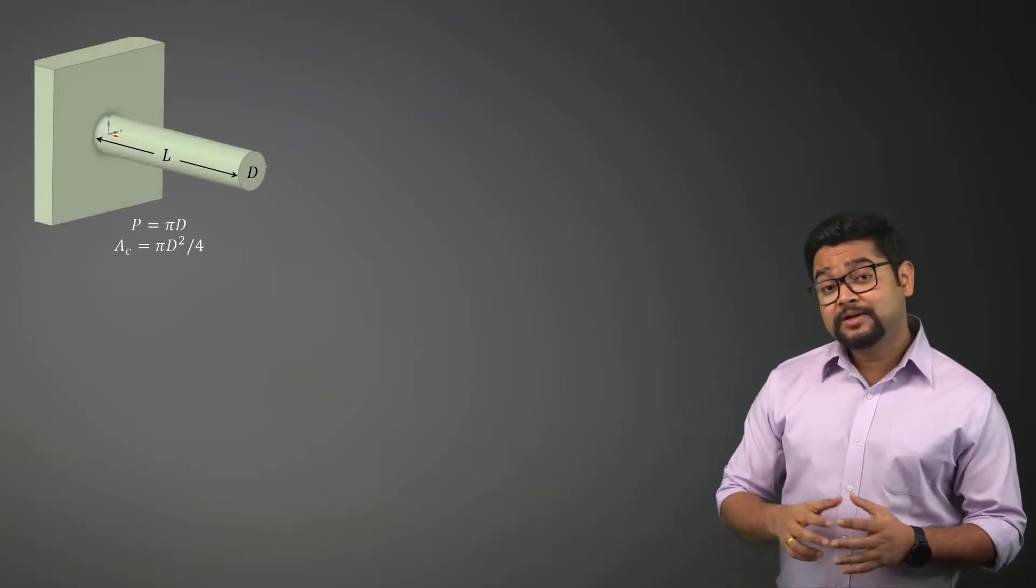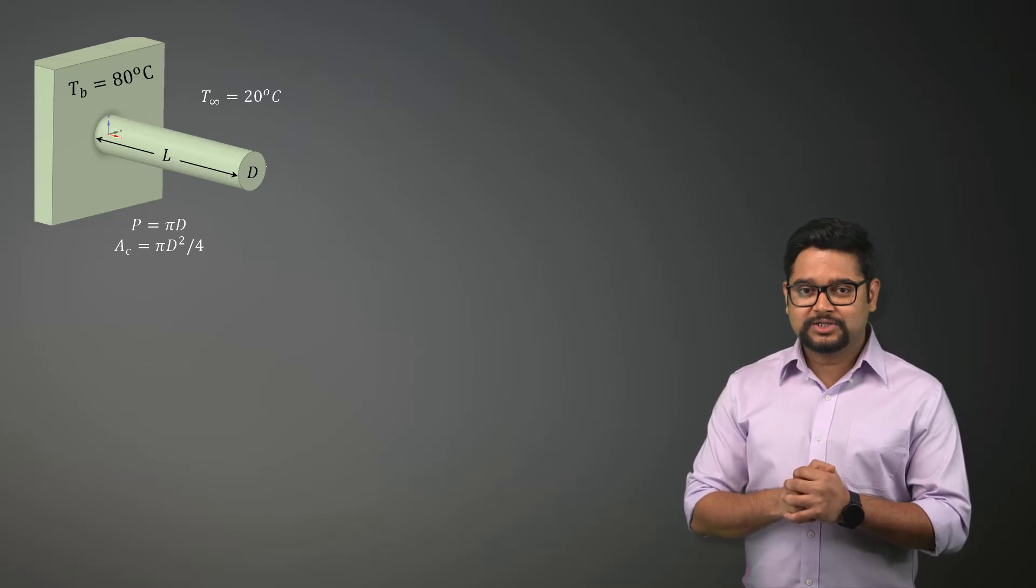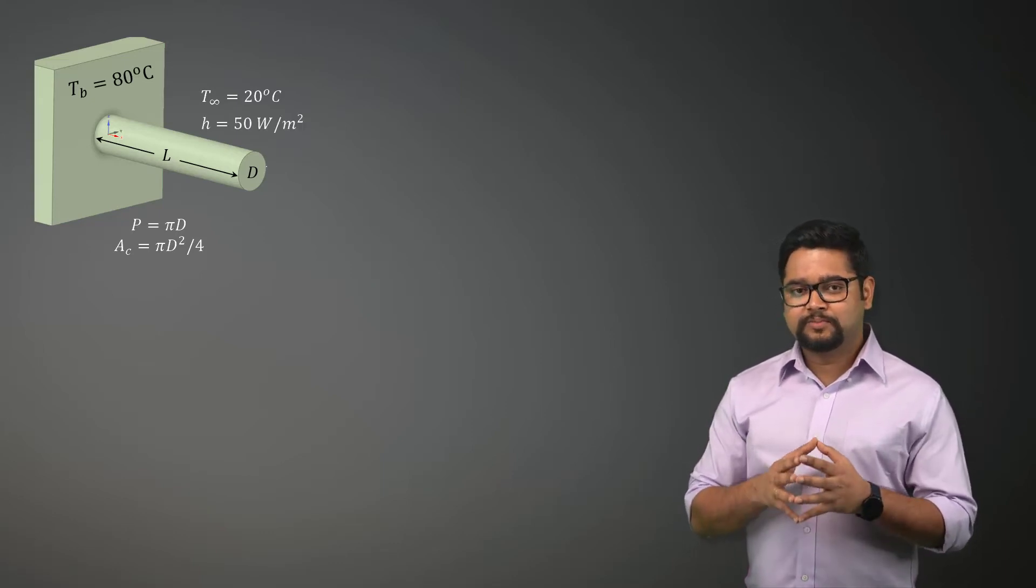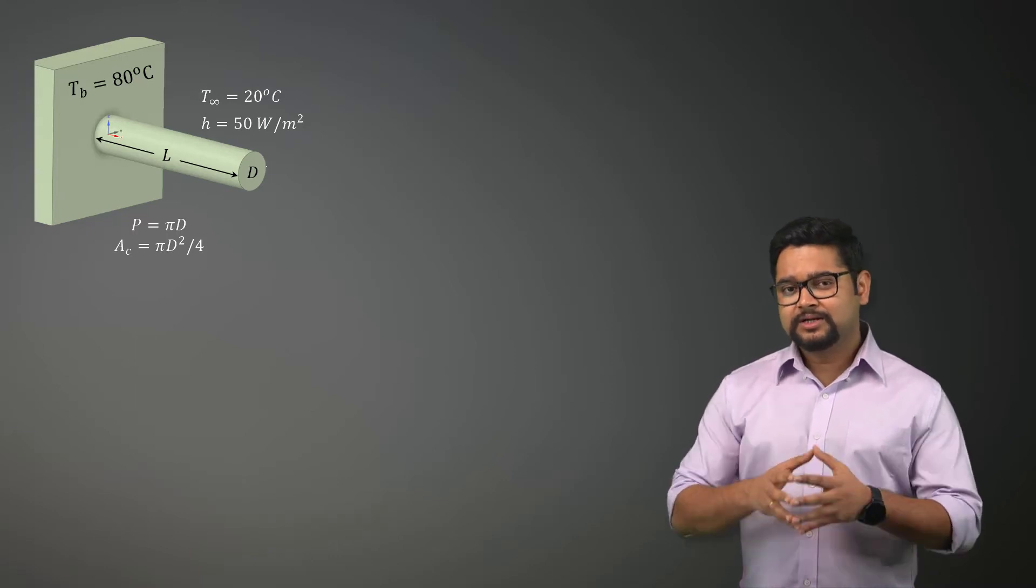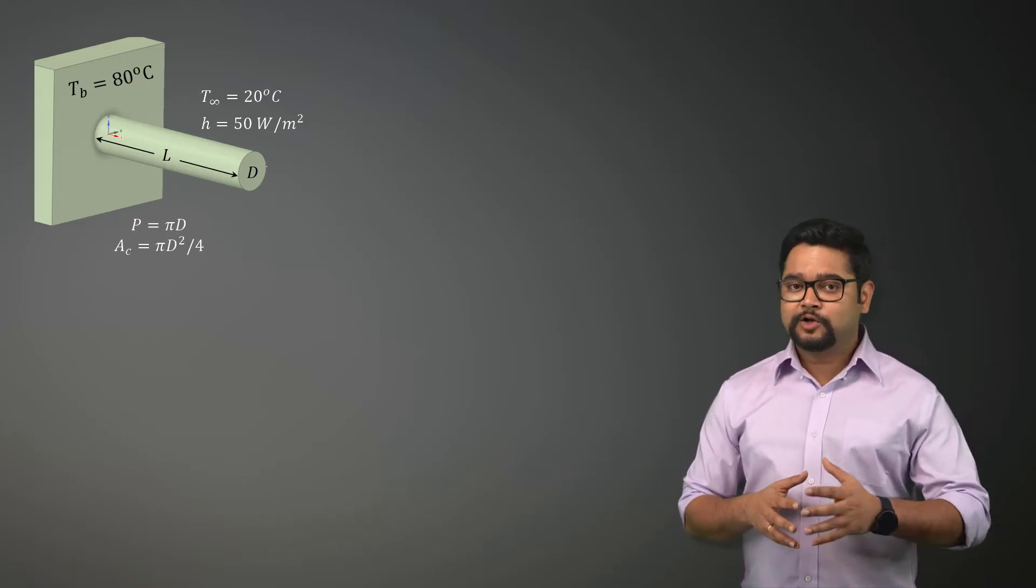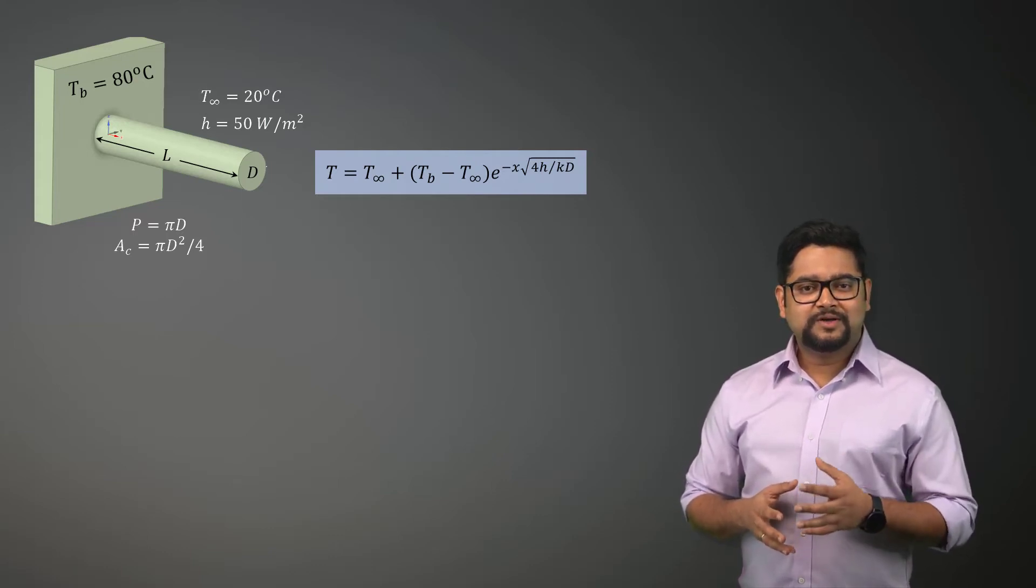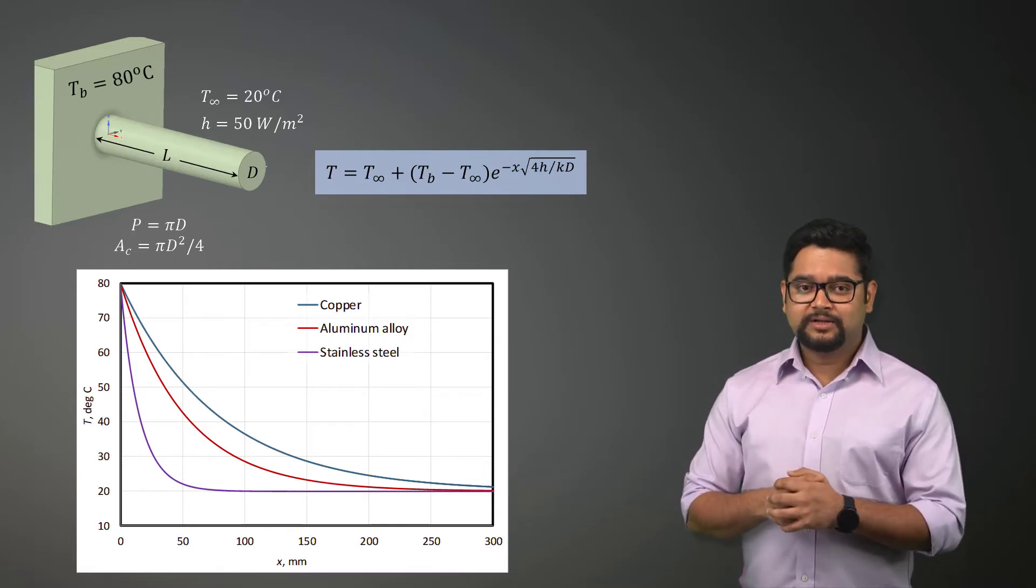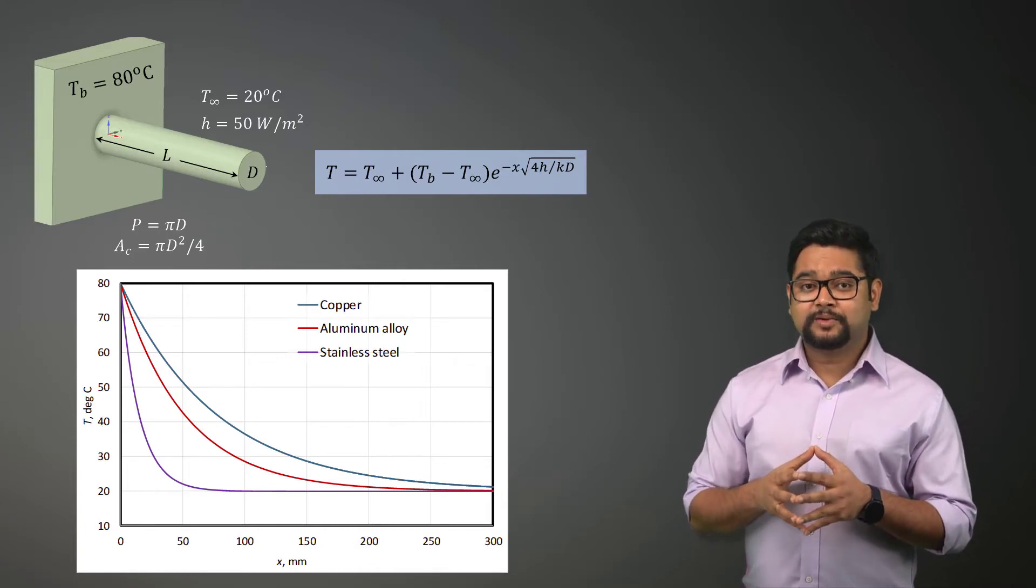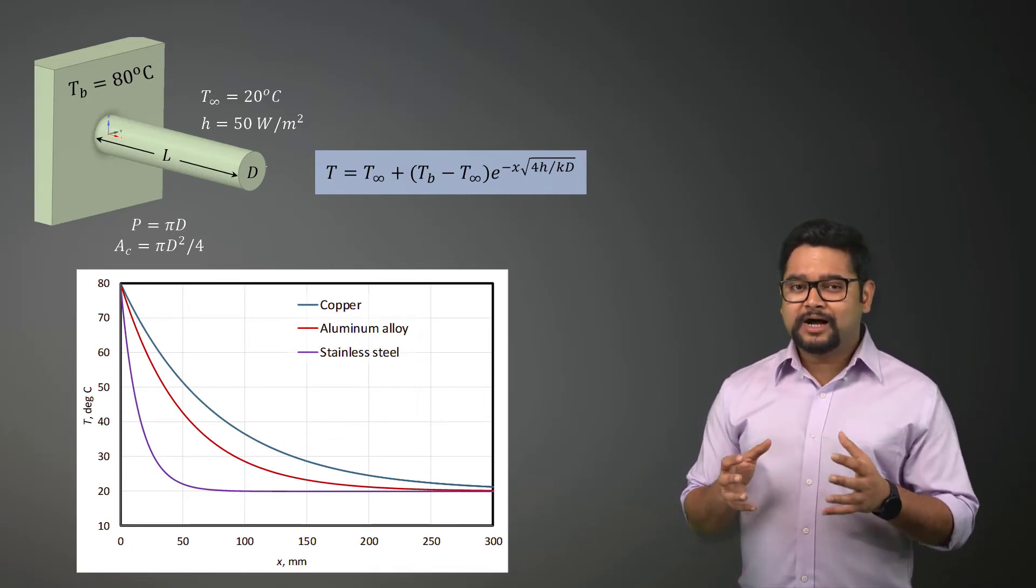Let's consider a long pin fin of a heat sink having a diameter of 3 mm. The fin base temperature is 80 degrees Celsius, whereas the ambient temperature is 20 degrees Celsius with a heat transfer coefficient of 50 watts per meter squared. Assuming the fin is long enough for its end to attain ambient temperature of 20 degrees Celsius, the temperature distribution is given by the following expression. Using this, we can plot the axial variation of temperature for fins made of different materials. As copper has the highest thermal conductivity among the three, we can see that the copper fin has the highest overall temperature compared to the other two. As a result, it will allow the highest heat transfer to the ambience and out of the heat sink.